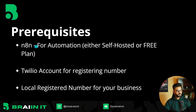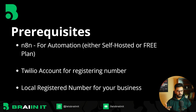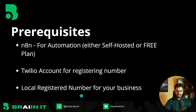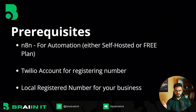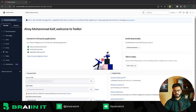For this process, what we'll need is n8n — the basics for our automation — either self-hosted or the free plan will work. The second is a Twilio account for registering our custom WhatsApp sender. The third and very important step is the local registered number for your business that we'll be linking with the chatbot. Once you're sorted with all the prerequisites, head towards Twilio.